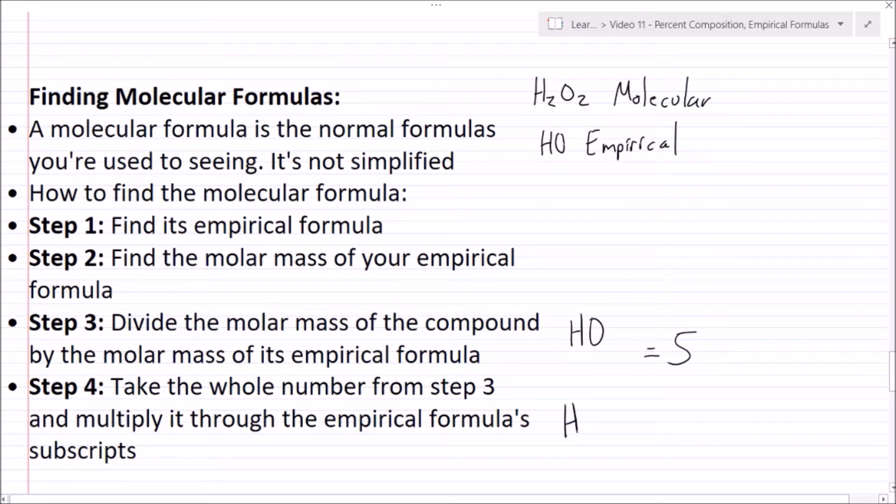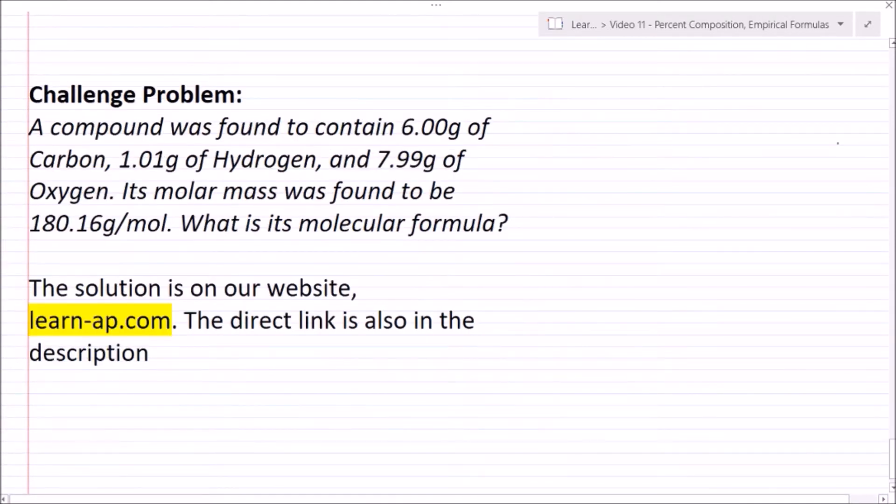All right, so that brings me to today's challenge problem. A compound was found to contain 6.00 grams of carbon, 1.01 grams of hydrogen, and 7.99 grams of oxygen. Its molar mass was found to be 180.16 grams per mole. What is its molecular formula? The solution to this is on our website, learn-ap.com, and I'll also put a direct link in the description for that practice solution.